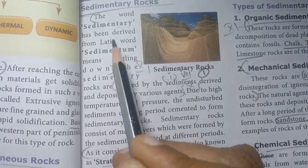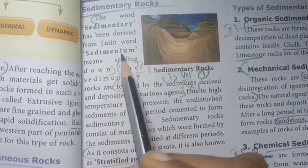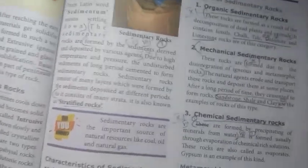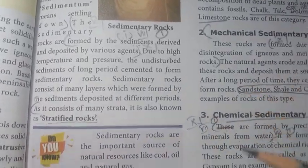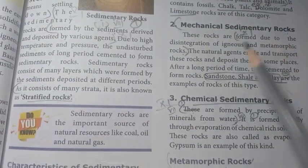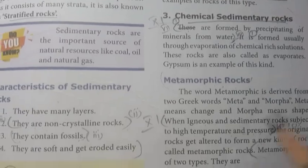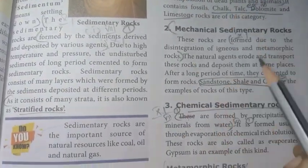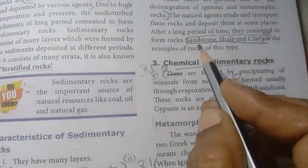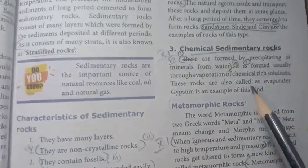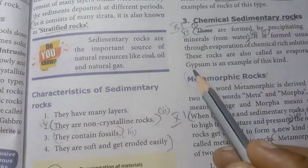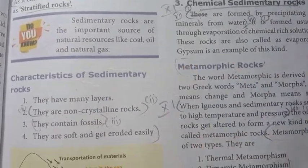The word 'sedimentary' comes from the Latin 'sedimentum' meaning 'settling down.' Types of sedimentary rocks include mechanical sedimentary rocks such as sandstone, shale, and clay, and chemical sedimentary rocks such as gypsum.